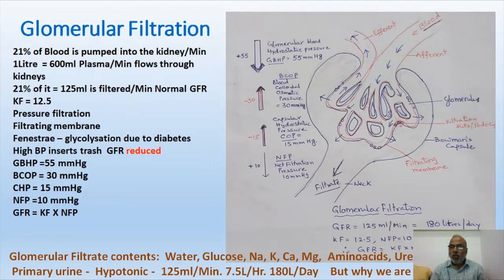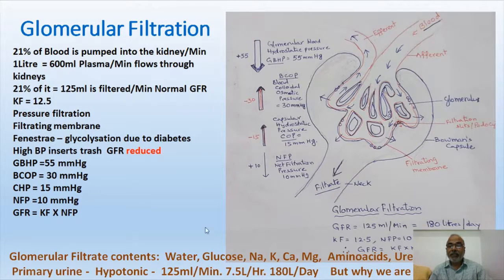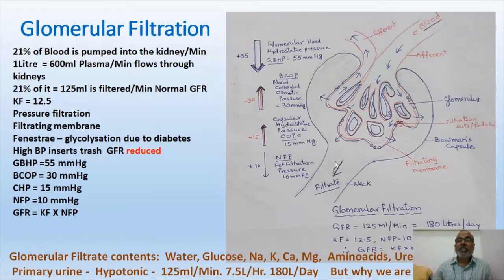The rate of filtration is 125 ml per minute, producing 7.5 liters per hour and 180 liters of primary urine per day. If all 180 liters were eliminated, we would need to drink 180 liters — which doesn't happen. Out of 180 liters, 99% of water gets reabsorbed because of the efficiency of the loop of Henle.